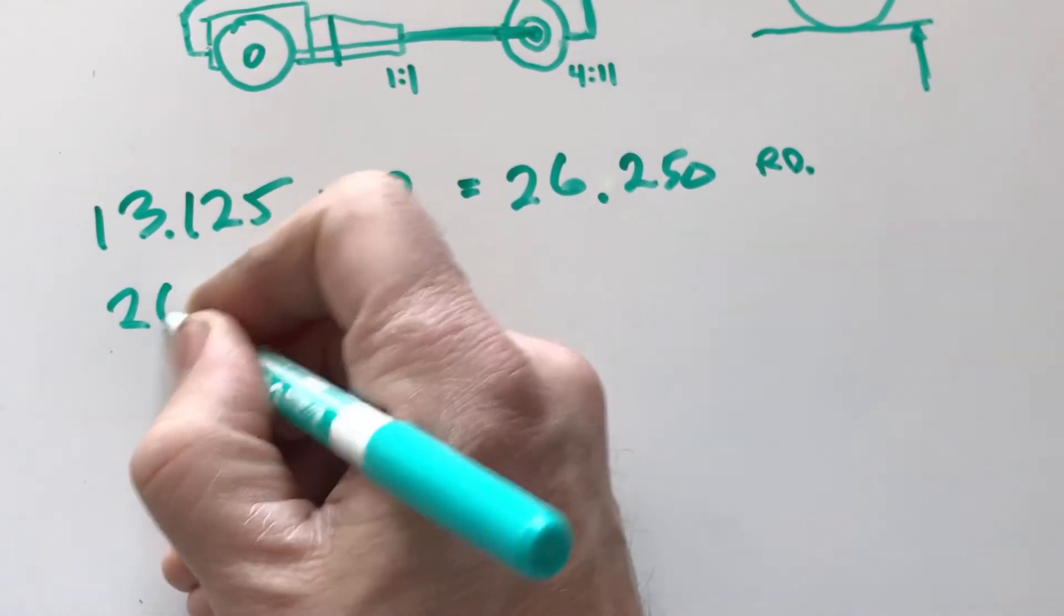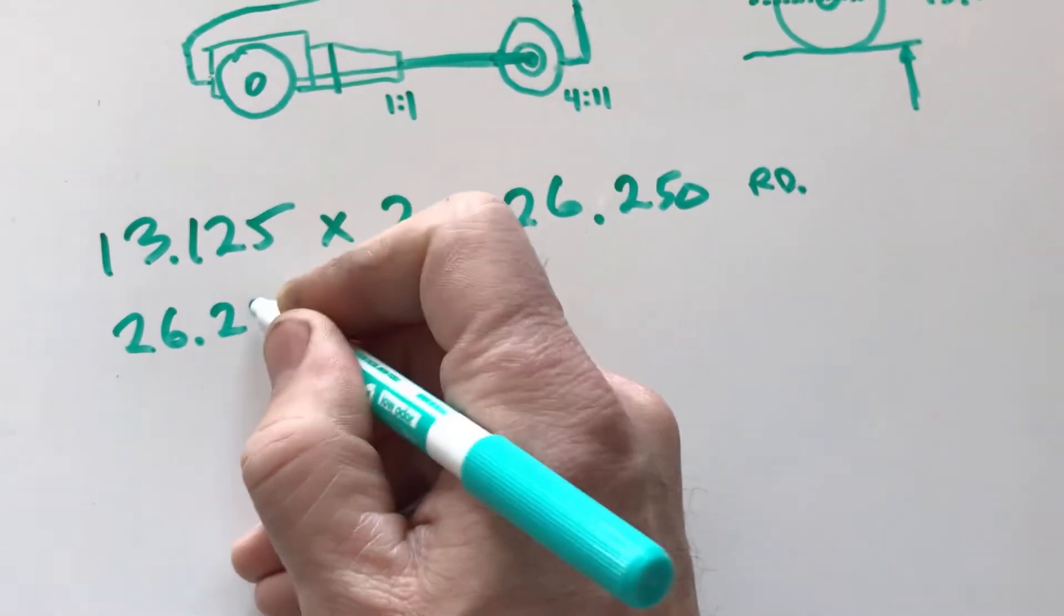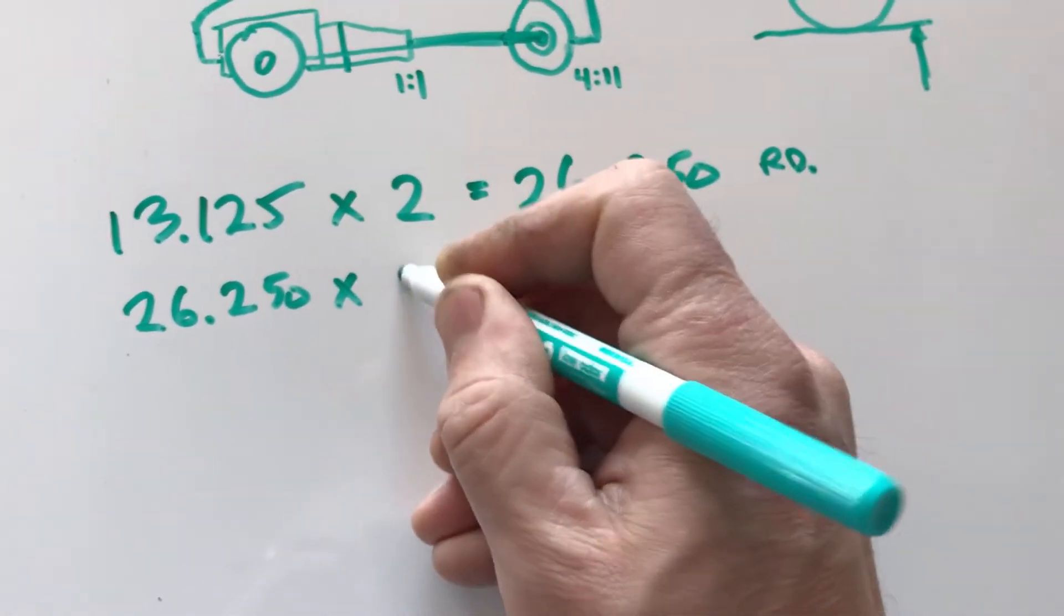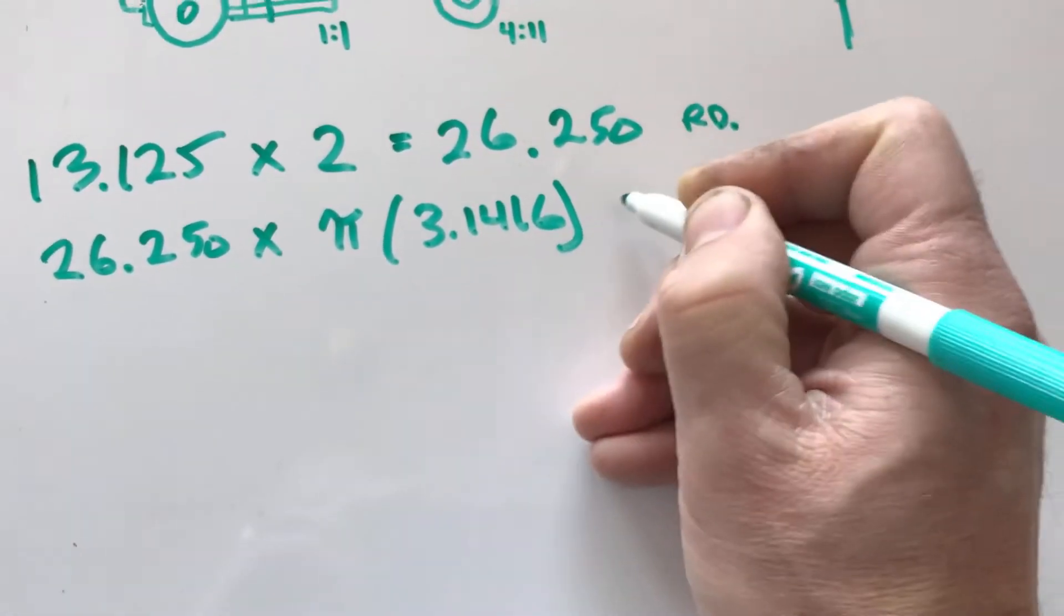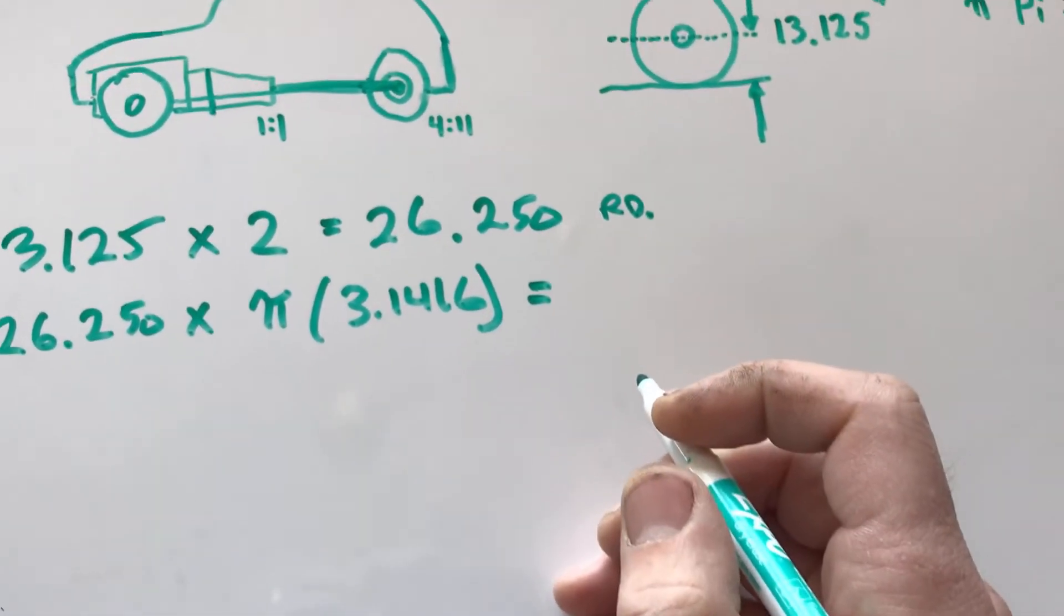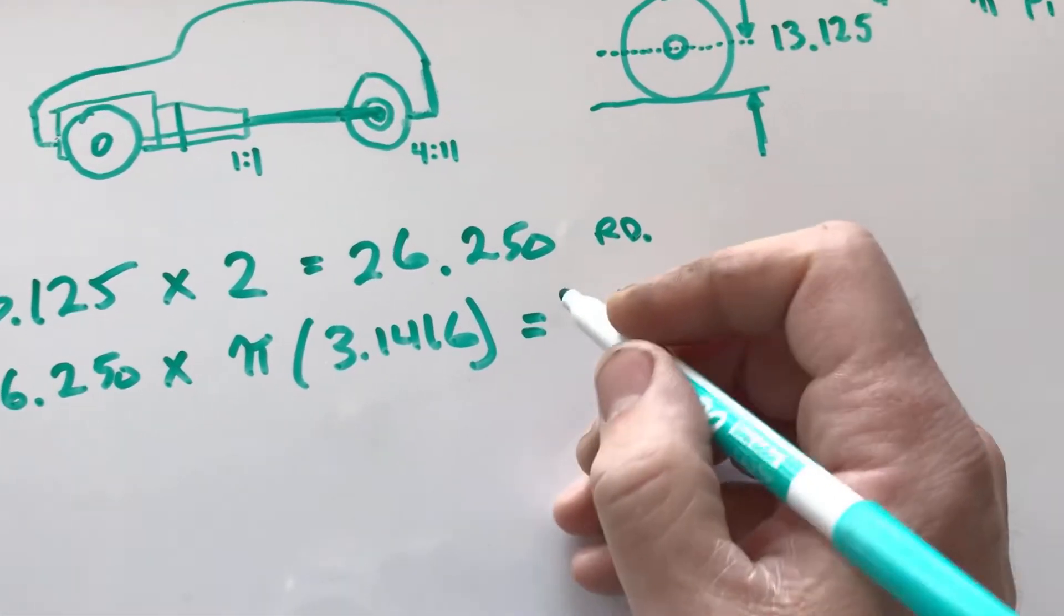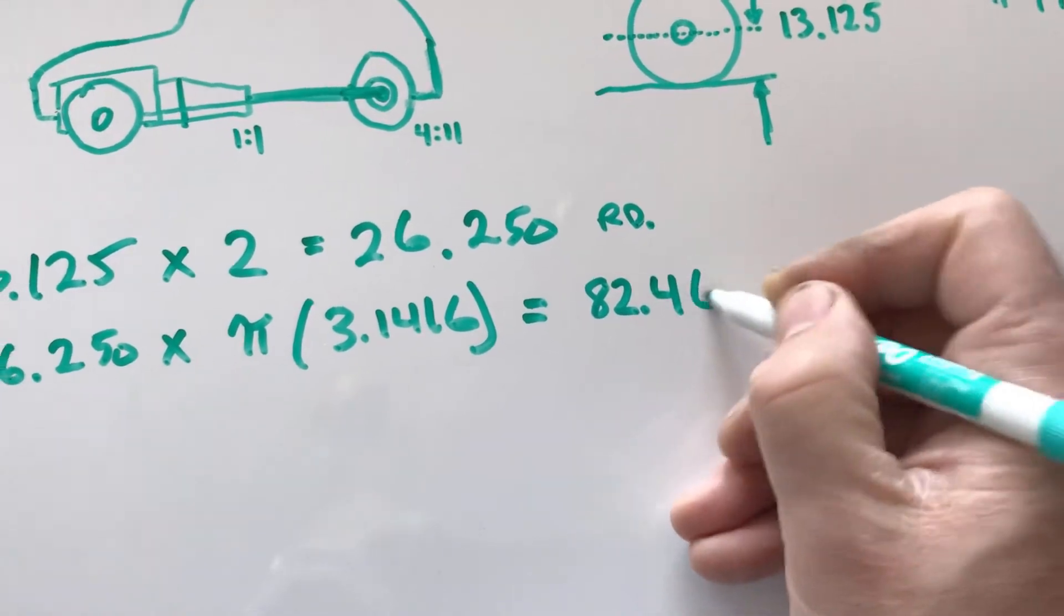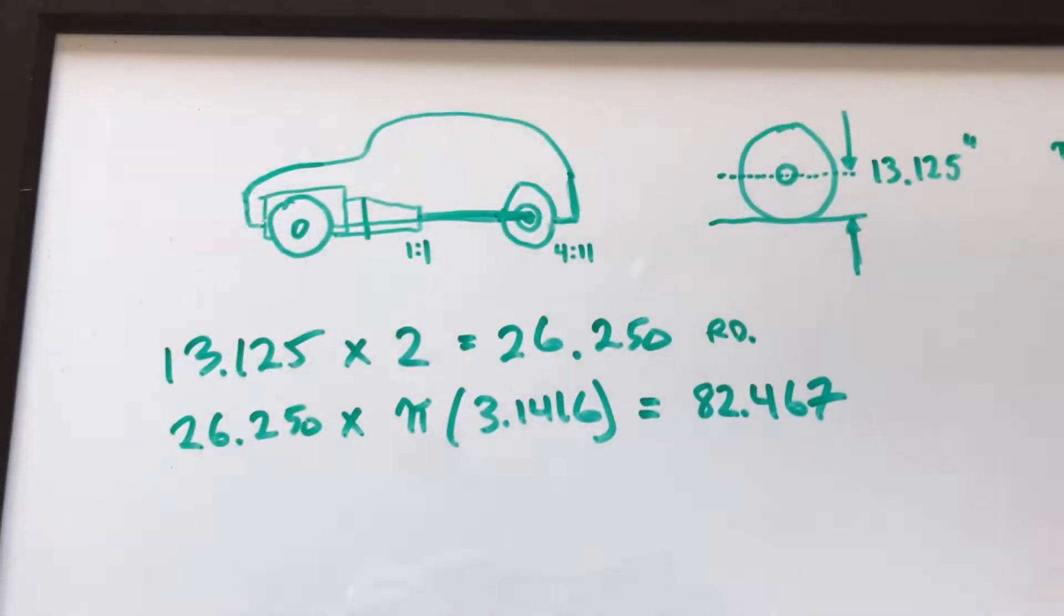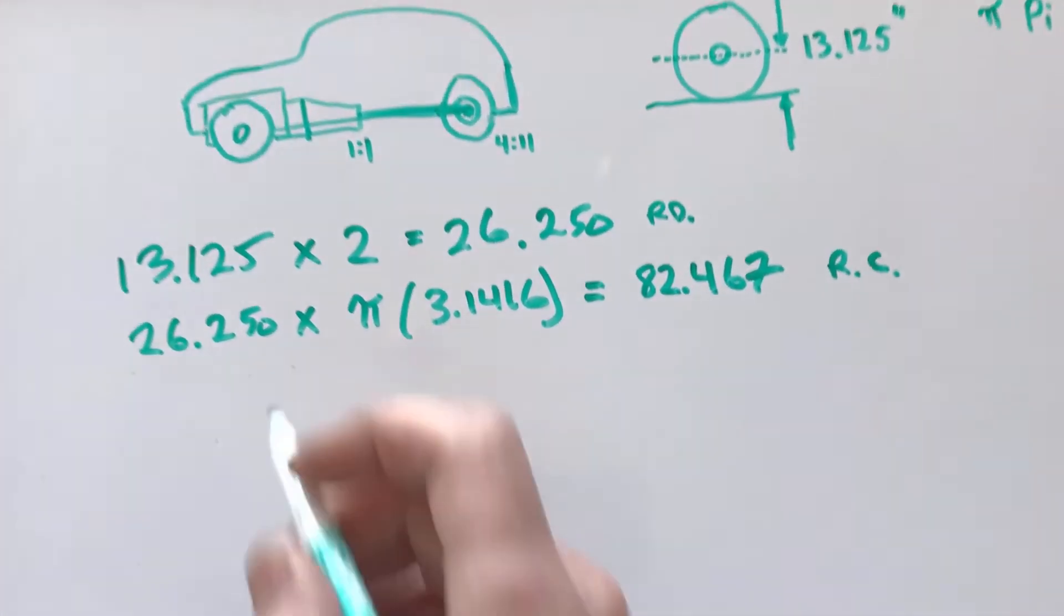Next we need to take our rolling diameter 26.250 times it by pi which is 3.1416. We have a rolling circumference that equals 82.467.